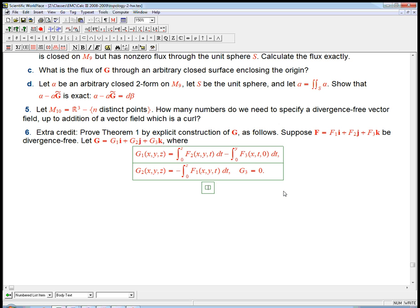We say g₃ equals 0—that's nice and simple. We don't actually need all 3 components, partly because of all the freedom we have to choose g. g₂ is a certain integral. We take f₁, the i-component of f, and integrate it from 0 to z.